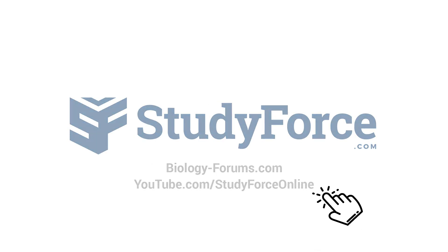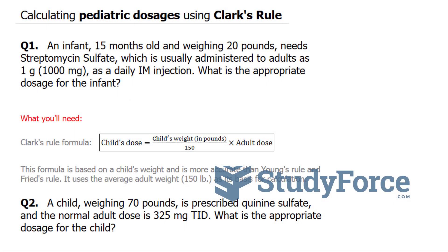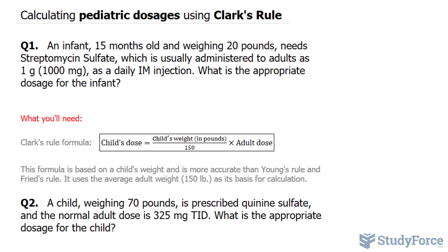In this lesson, I'll show you how to calculate pediatric dosages using Clark's rule. We've already studied Fried's rule and Young's rule. This rule, on the other hand, is based on a child's weight and is more accurate than the two. It uses the average adult weight of 150 pounds as its basis for the calculation.